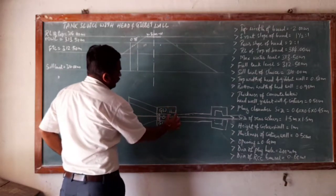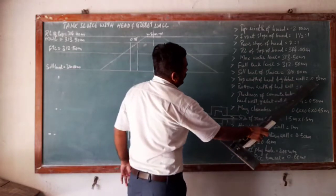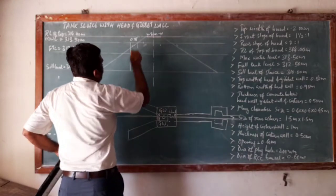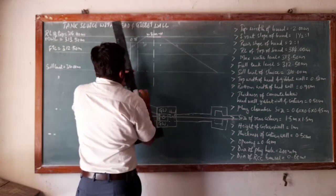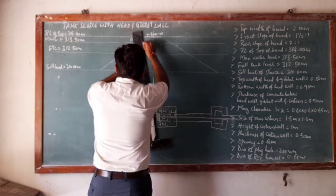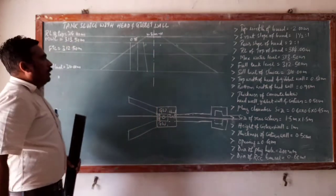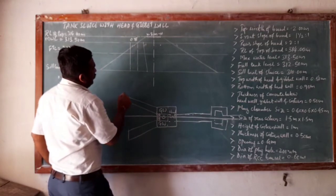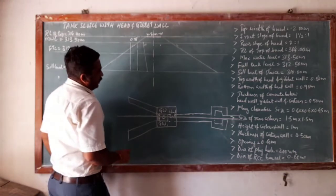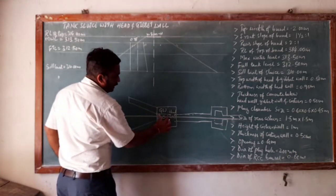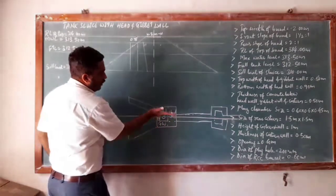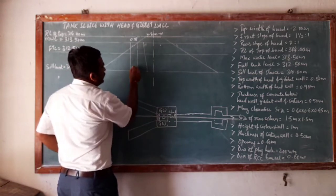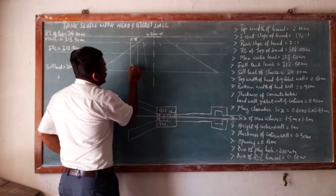Now I have to draw the head wall. The head wall dimension is 0.5 meter at the top and 0.9 meter at the bottom. I shall take a thickness of 0.5 meter at the top and 0.9 meter at the bottom, and join these two with a faint line. This is the head wall. After this, we shall incorporate the plug chamber. The plug chamber dimension is 0.6 × 0.6 × 0.45. When you cut here, you see only two dimensions: 0.6 and 0.45. Measure 0.6 and take a height of 0.45 — this is your plug chamber.